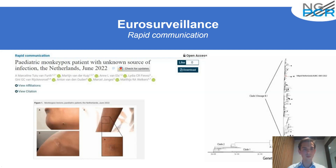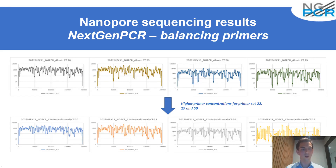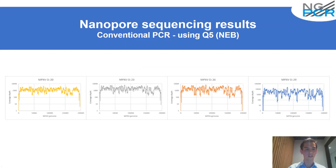We tried to optimize the workflow further by increasing the primer concentrations for primer sets 22, 29, and 50, where we saw three regions with lower coverage. However, using the NextGen PCR, we did not obtain higher coverage — we actually saw more imbalance in the sequencing data. Using the conventional PCR, the adjustment did have an effect, and we did get higher and better coverage for those three regions.